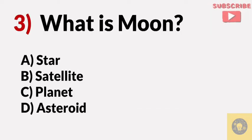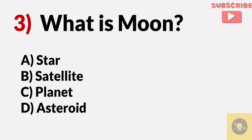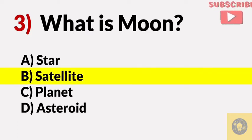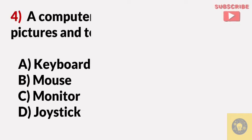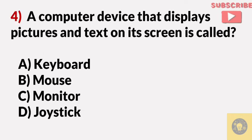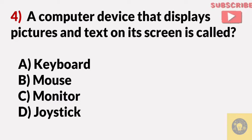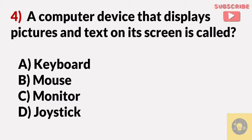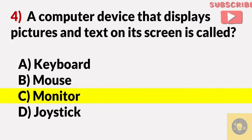What is the Moon? Answer B, satellite. A computer device that displays pictures and text on a screen is called — Answer C, monitor.